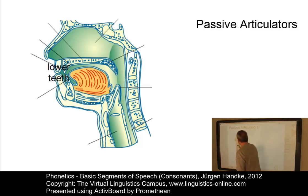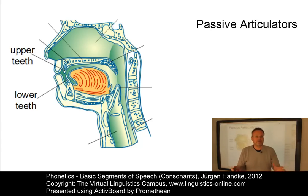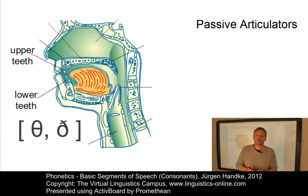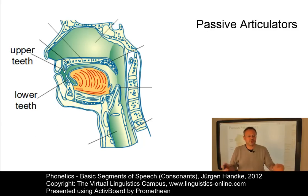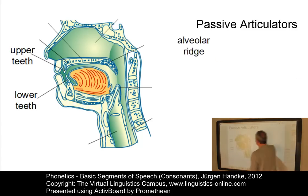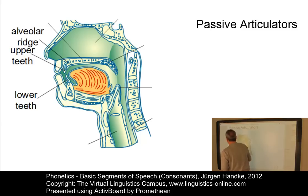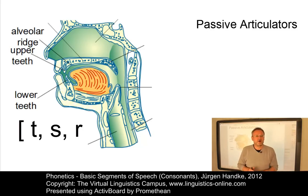Starting at the front of the vocal tract, the following passive articulators can be classified. First, the lower and upper teeth. The upper teeth are locations where the tongue makes contact to produce several different consonants. The lower teeth are positions where the lips make contact to produce consonants. Another passive articulator is the alveolar ridge, which is an area for the articulation of many consonants. It is situated just behind the teeth, and typical consonants are T, S, or R.